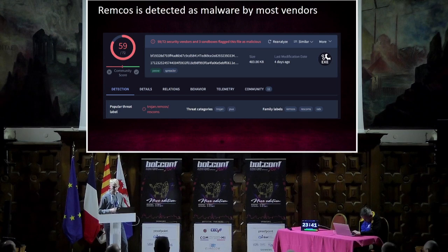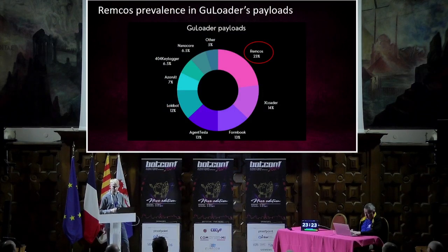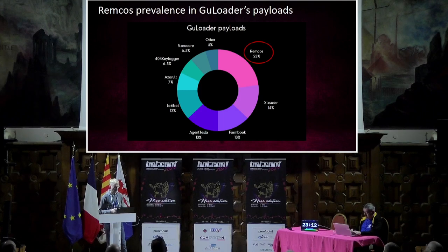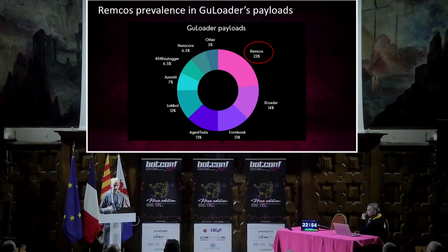However, Remcos consistently takes highest places in top malware rankings. Non-packed Remcos samples are easily detected by antivirus solutions, making it difficult to use for criminal purposes. However, GuLoader can be used to help Remcos bypass antivirus protection. We analyzed hundreds of GuLoader payloads distributed in 2022 and 2023 — nearly a quarter of all successfully decrypted GuLoader payloads were Remcos samples. For comparison, during our previous investigation a few years ago the most popular payload was FormBook while Remcos was only around 6%. In 2023, Remcos became the most common malware distributed using GuLoader — and as we will show, this is not a coincidence.